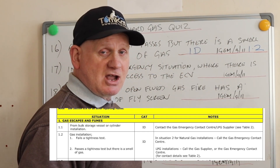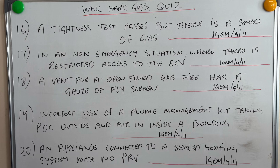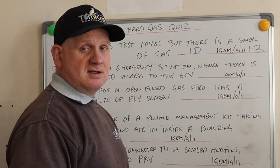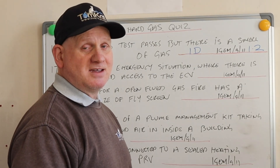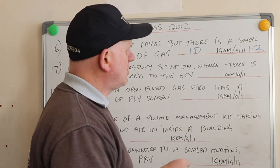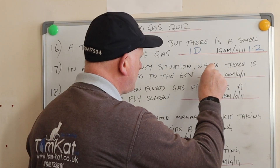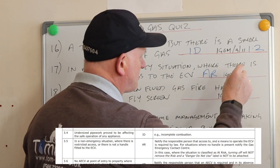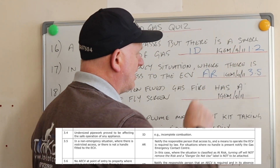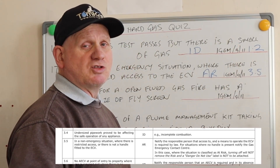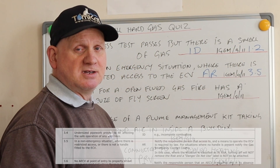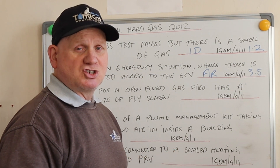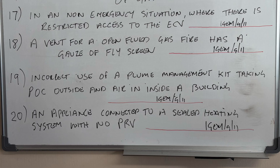Question seventeen: in a non-emergency situation where there is restricted access to the ECV. If you said ID, you'd be wrong — it's actually 'at risk,' and if you want to know where it is, it's at section 3.5 of the IGEM G11 unsafe situations procedure.